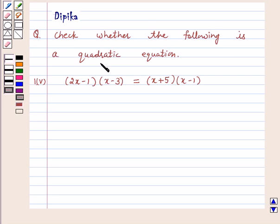Check whether the following is a quadratic equation. 2x minus 1 into x minus 3 is equal to x plus 5 into x minus 1.